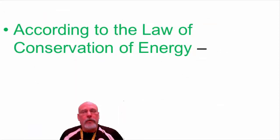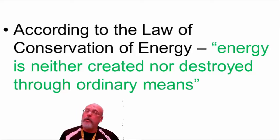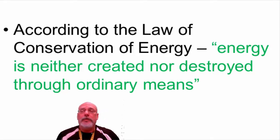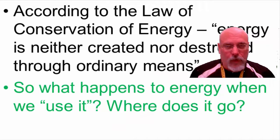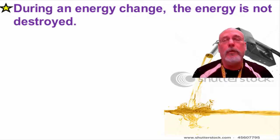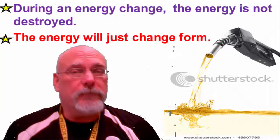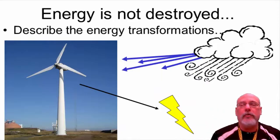You may recall the law of conservation of energy: energy is neither created nor destroyed. If you start with 100 units of potential energy, you should end with 100 units of kinetic energy in some form. What happens when you use energy is that it changes form — during an energy change, the energy is not destroyed, it simply changes form.